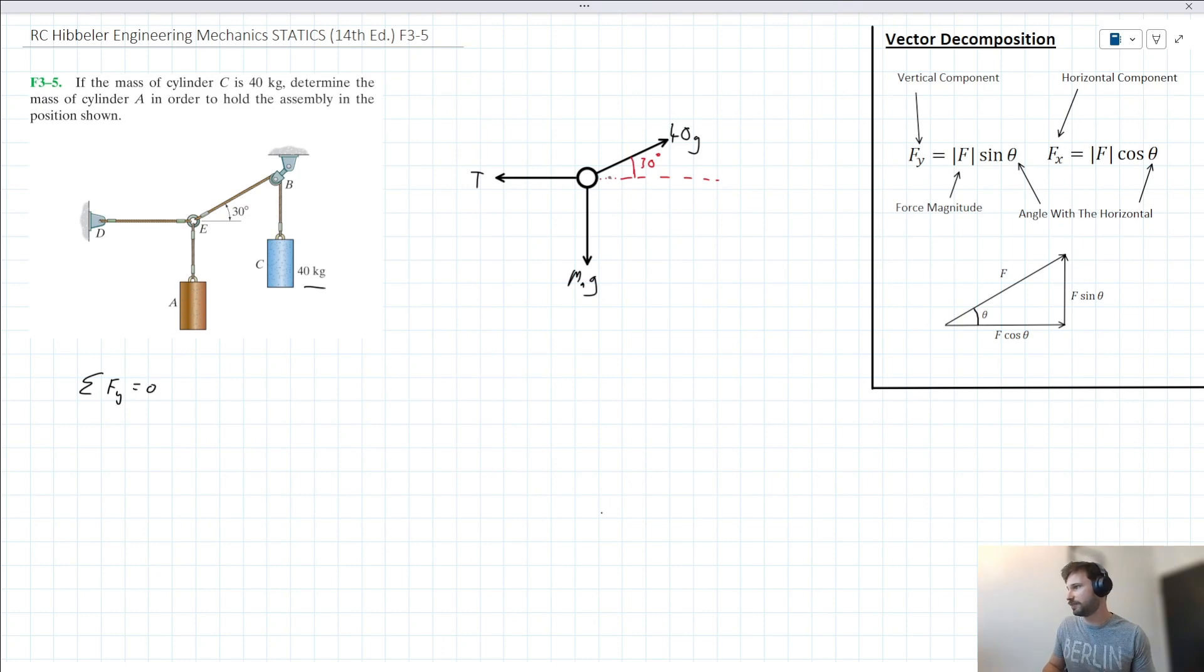The reason is because when we consider what's acting up and what's acting down, we've got M_A times G acting down, and we've got a known value acting up - that 40G, or at least the vertical component of that 40G force.